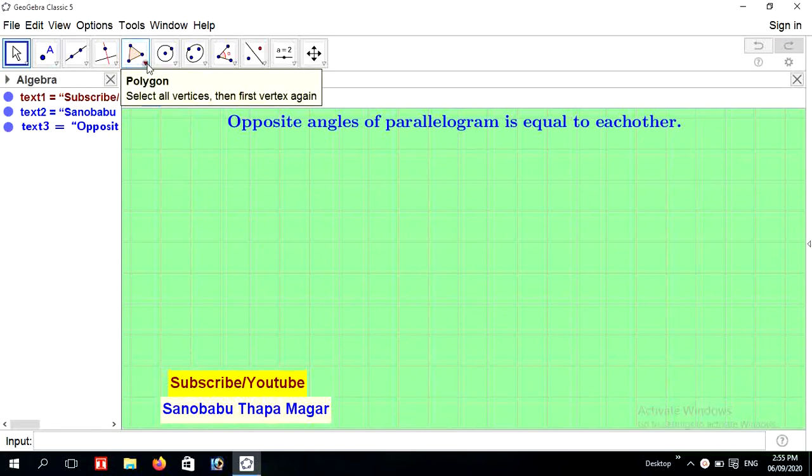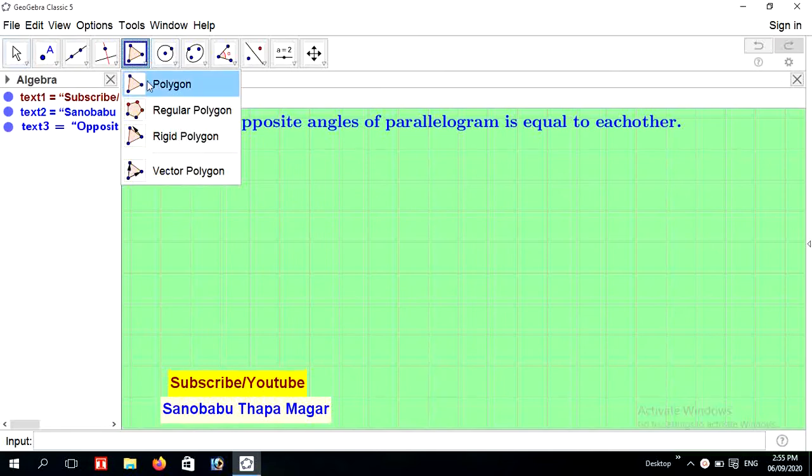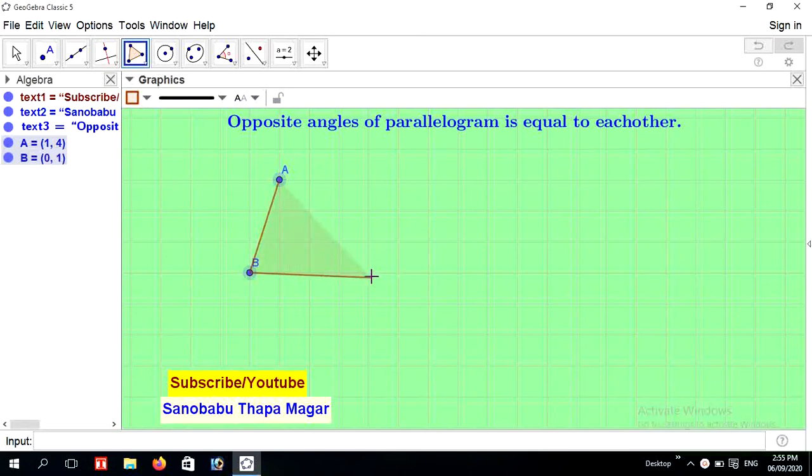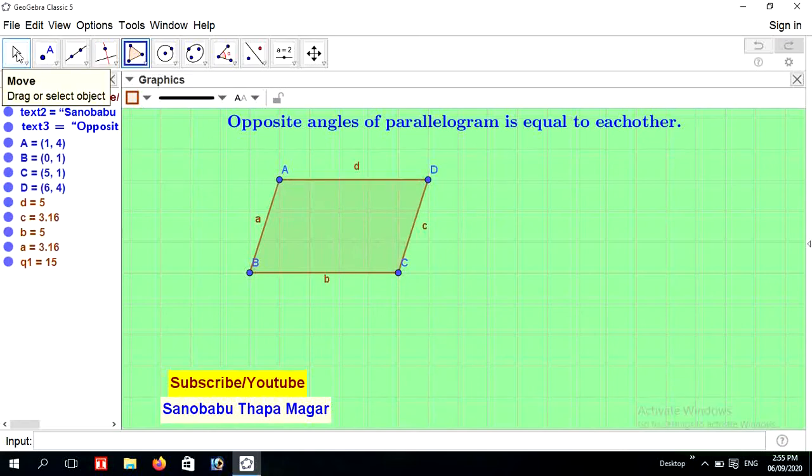Now to construct a parallelogram, go to polygon tool and press polygon option and construct the parallelogram here. You can use different methods to construct parallelogram. You can see here parallelogram whose name is ABCD. Now go to circle tool.